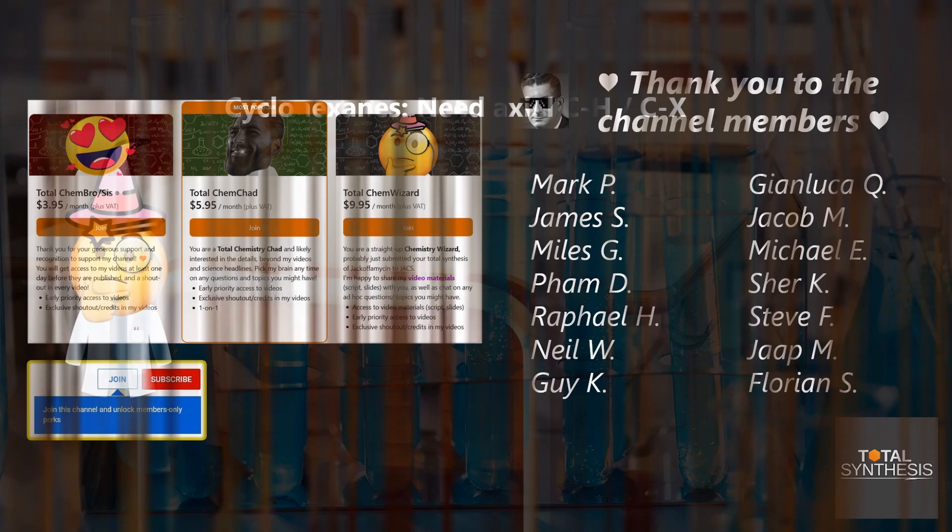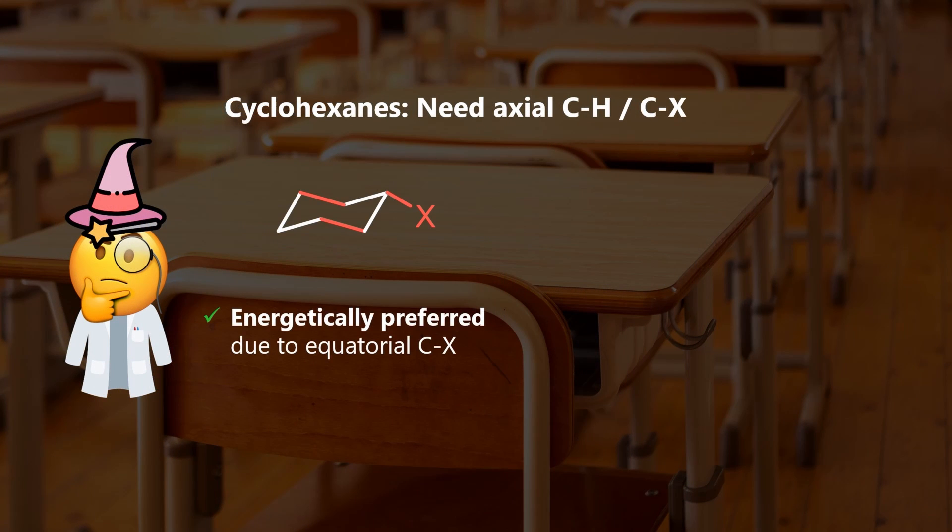Another favorite of many chemistry teachers are cyclohexanes. You will know that substituents like to be equatorial to avoid steric clashes via 1,3-diaxial interactions. However, because the leaving group would be anti to CC bonds and not any CH bonds, E2 is impossible.